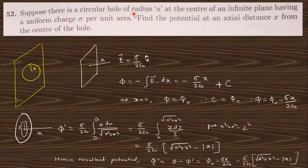Next question: Suppose there is a circular hole of radius a at the center of an infinite plane sheet. This sheet is charged uniformly with σ per unit area. Find the potential at an axial distance x from the center. For that you need to know the potential for an infinite plane sheet and a circular disk.